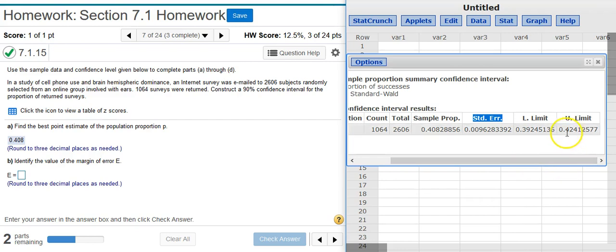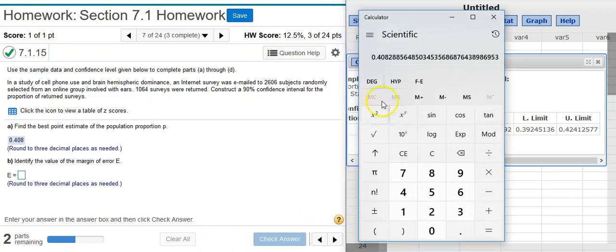Alternatively, I can take the upper limit and subtract out the point estimate. That will give me the same number. We already have the point estimate here in the calculator, so I'm just going to go ahead and subtract out that lower limit.